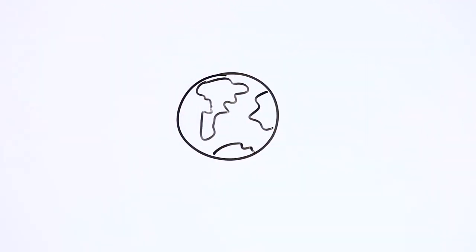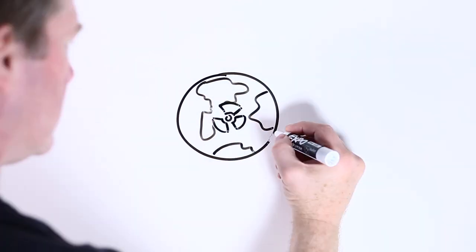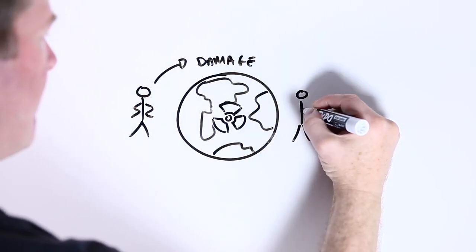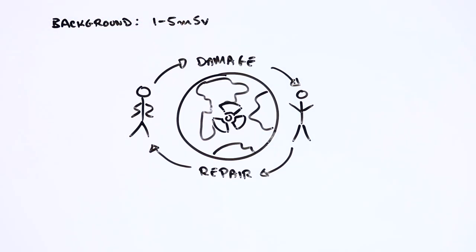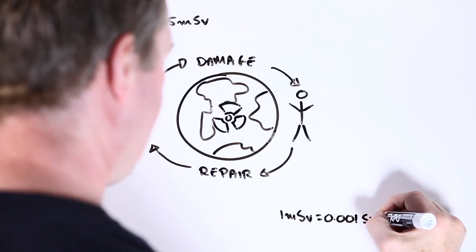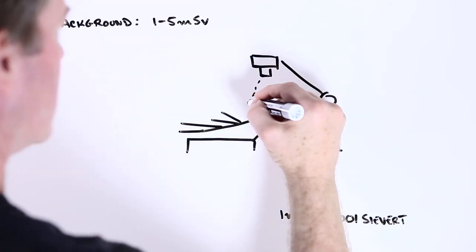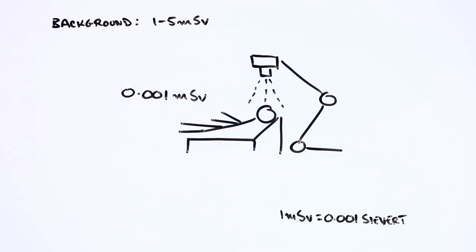On the other hand, because we live on a radioactive planet, we know that our bodies are pretty good at repairing the damage from low-level exposures. For instance, you're probably exposed to somewhere between one and five thousandths of a sievert every year from the Earth's natural background radiation. A dental x-ray will expose you to something like ten millionths of a sievert.